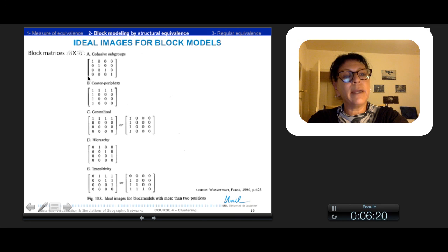Finally, one can examine some few ideal images that display theoretically important structural properties. The cohesive subgroups here correspond to a reflexive position level, so it privileges the diagonal. The center periphery pattern consists of a core position, which is internally cohesive, and one or more other positions with ties to the core position, but not to each other.